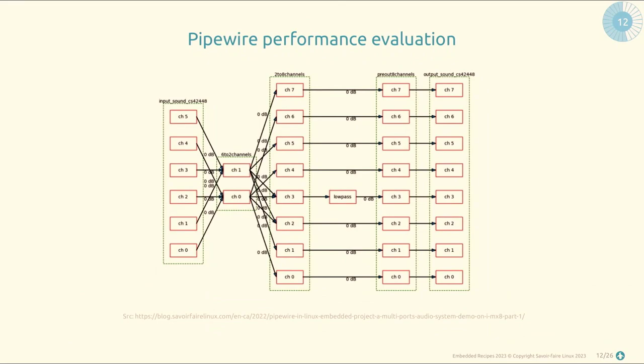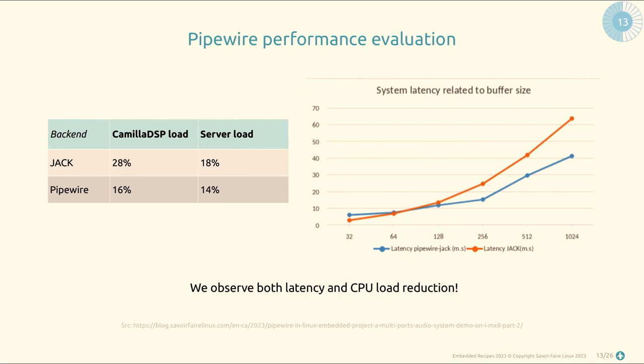The karaoke application graph is actually quite simple: we take all input channels — microphones, instruments, music players — mix everything into two channels, then route them to 8 channels, and emulate a 7.1 surround setup with a low-pass filter for a subwoofer and virtual surround speakers. The goal isn't to develop a DSP application but to have a common benchmark between different sound servers we can reuse without too much bias.